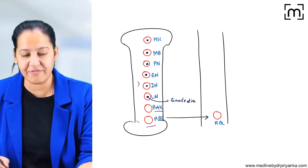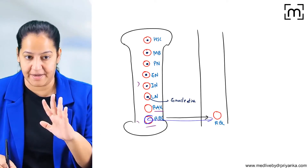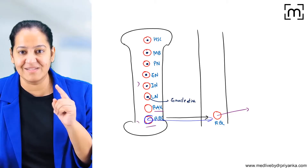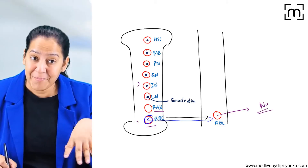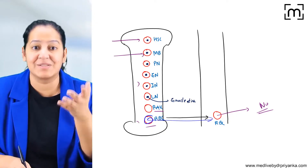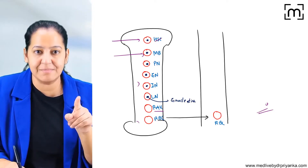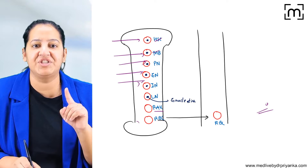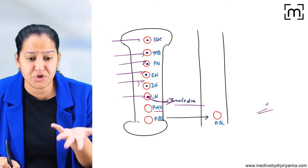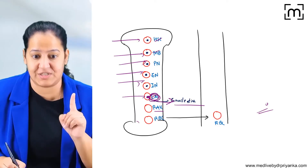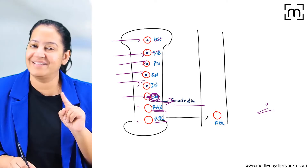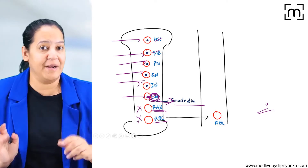Do RBCs have a nucleus? RBCs are the final product that come into the blood — the precursors don't come into the blood. The answer is no — RBCs are non-nucleated cells, but their precursors have a nucleus. The nucleus is present in the hematopoietic stem cell, myeloblast, pronormoblast, and early and intermediate normoblast. At the late normoblast stage, enucleation — or extrusion of the nucleus — takes place. After that, reticulocytes and RBCs are both non-nucleated.